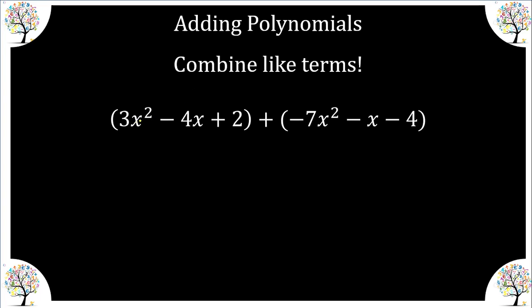Here we have a quadratic trinomial added to another quadratic trinomial, and we can simply just drop the parentheses because there's nothing out front of any of these polynomials except the understood one. So I simply distributed the understood positive one here, allowing me to drop all parentheses.